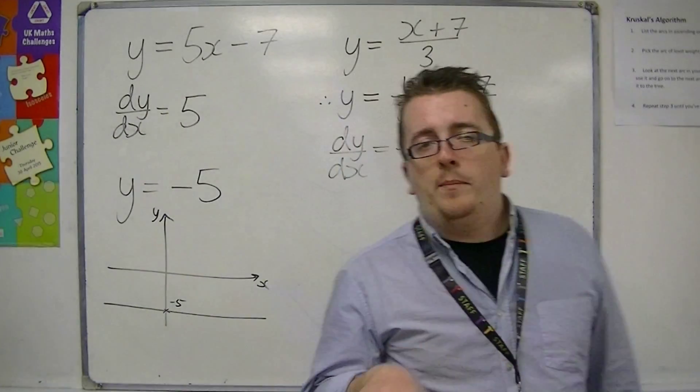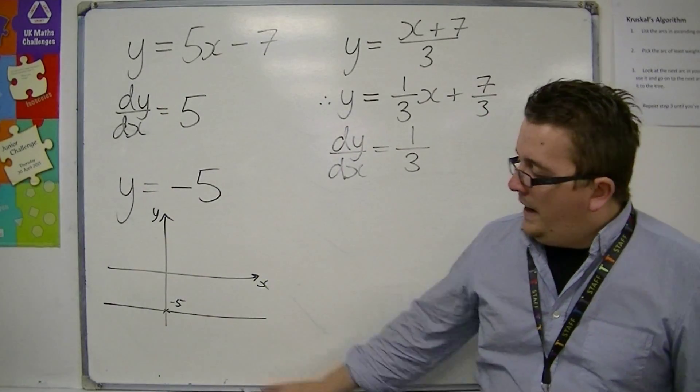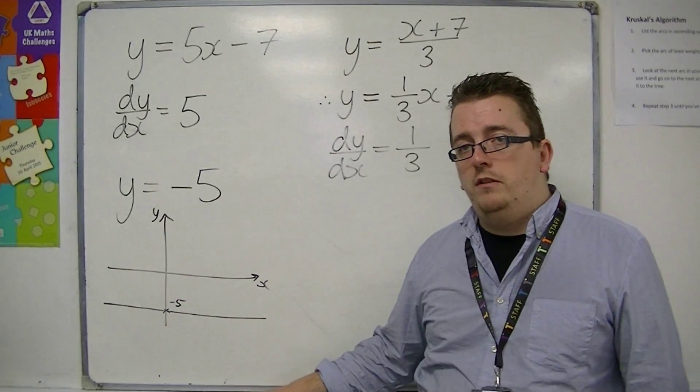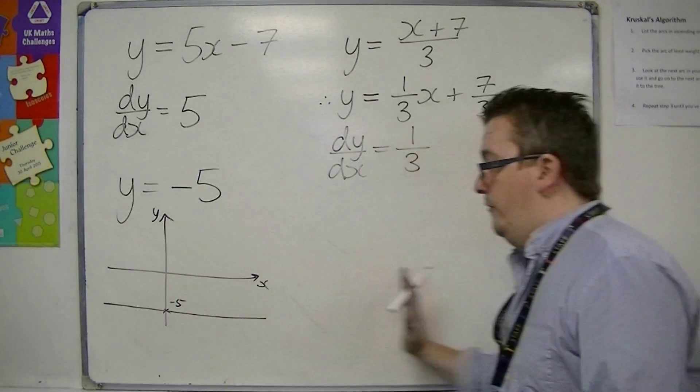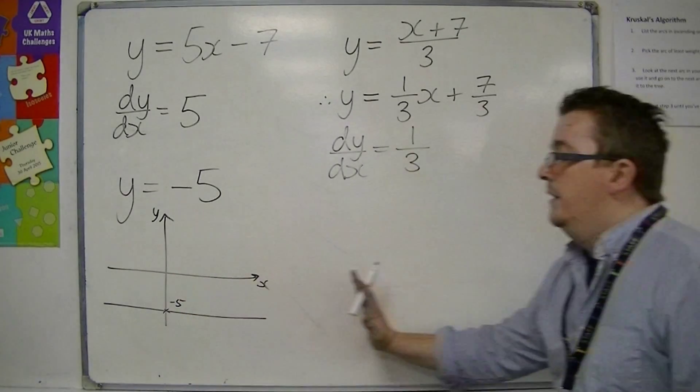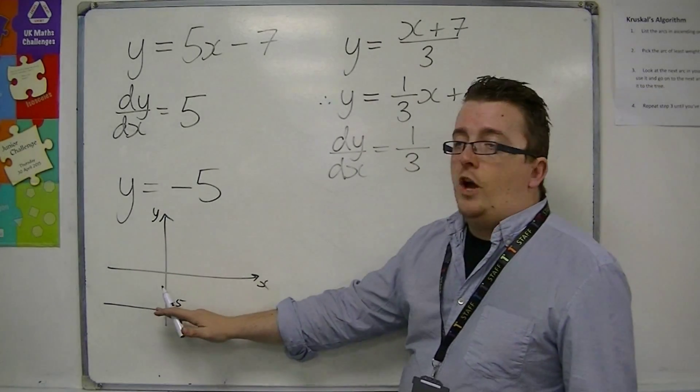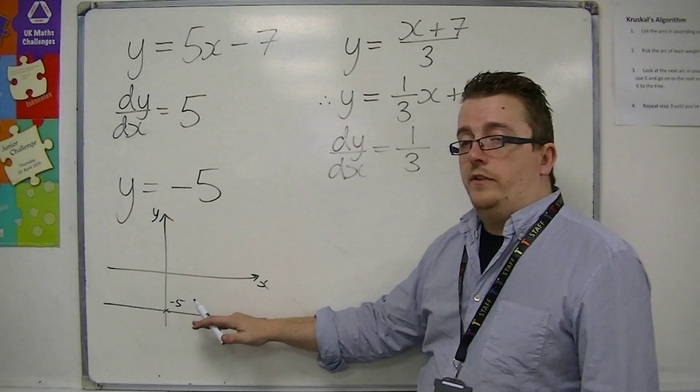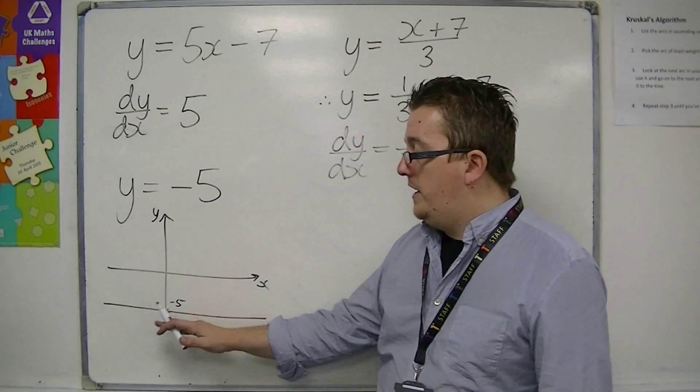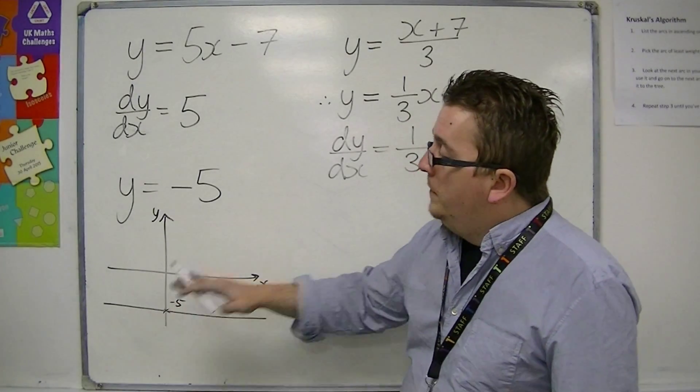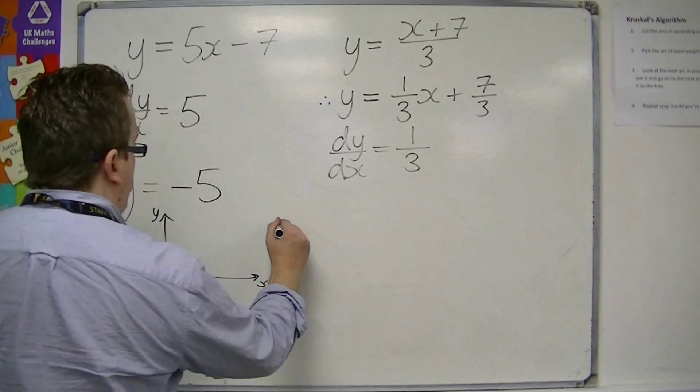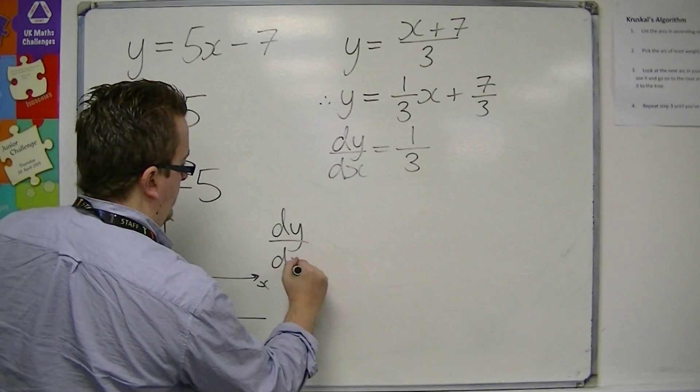If you think about the rate of change, how is that line changing as you go further on, as x increases, does it go up or down? Well, it doesn't. It just stays fixed, completely fixed. And so the gradient of this line is 0.